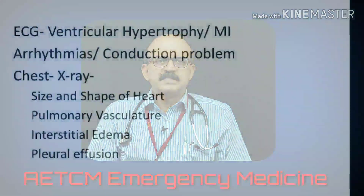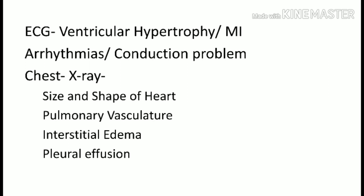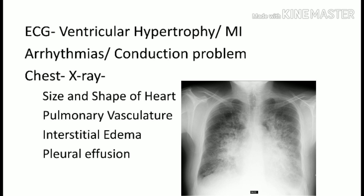The ECG is important, especially in chronic hypertension showing ventricular hypertrophy, or in cardiomyopathies. Acute changes include voltage changes, appearance of Q waves, and ST-segment changes. Arrhythmias and conduction problems can also be diagnosed. On chest X-ray, cardiac size and shape are assessed — in congestive heart failure, cardiac size is enlarged, whereas in acute ischemic heart failure, the heart size may be normal but the pulmonary vasculature shows interstitial edema progressing to alveolar edema and pleural effusions.